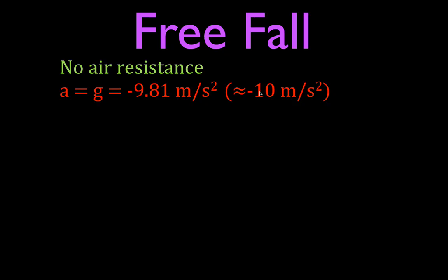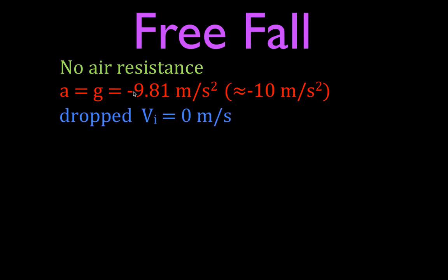Now, in both cases, whether it's 9.81 or 10, the object is falling down and the acceleration is in the negative direction. So we say it's negative 9.81. When you do free fall problems — kinematic problems — you always want to be consistent with your signs and use negative 9.81 meters per second squared.